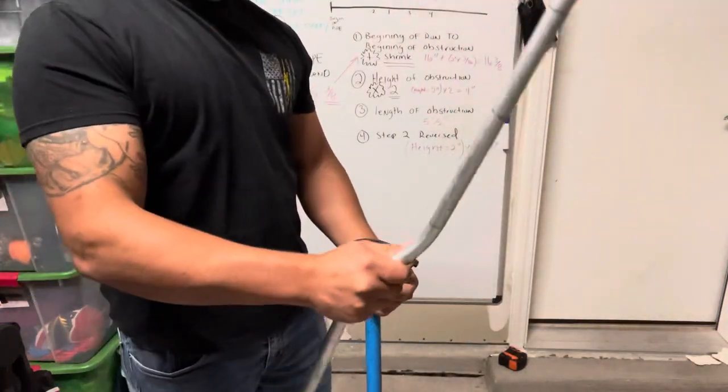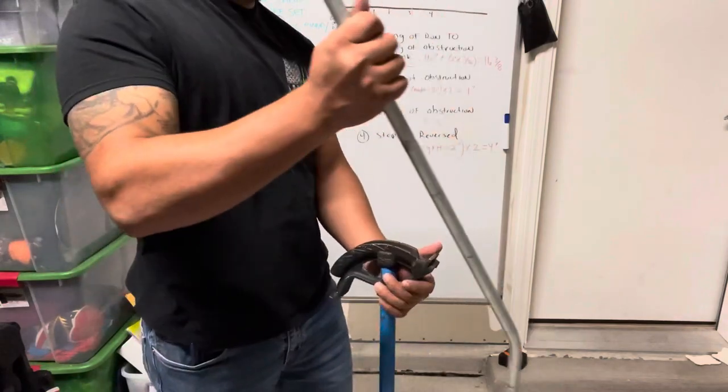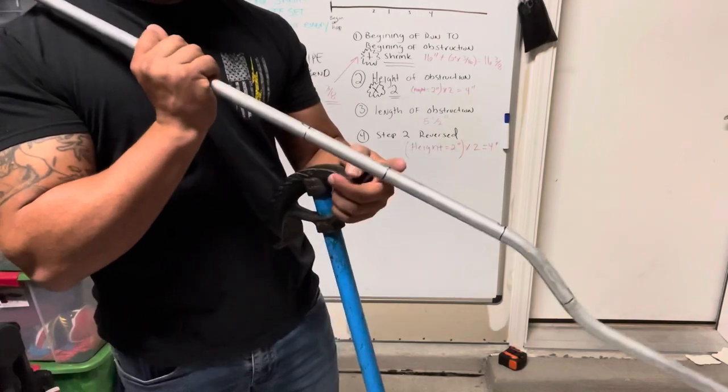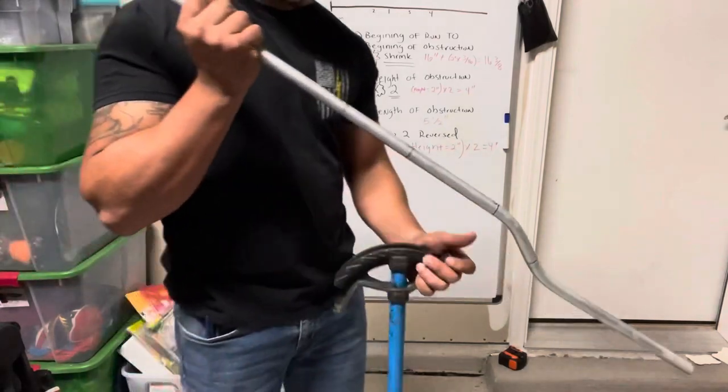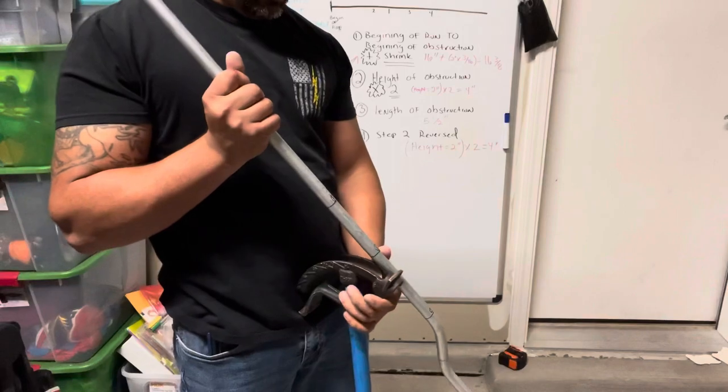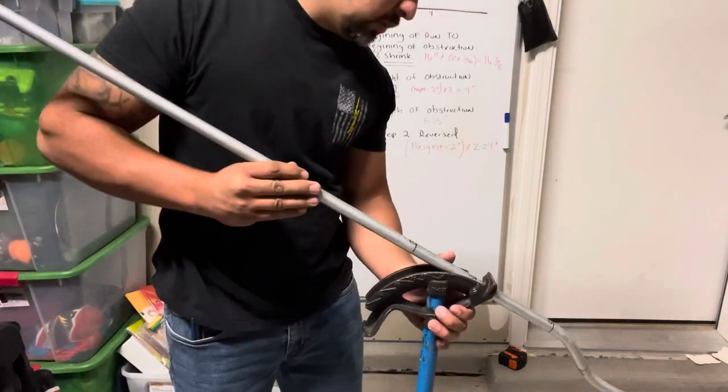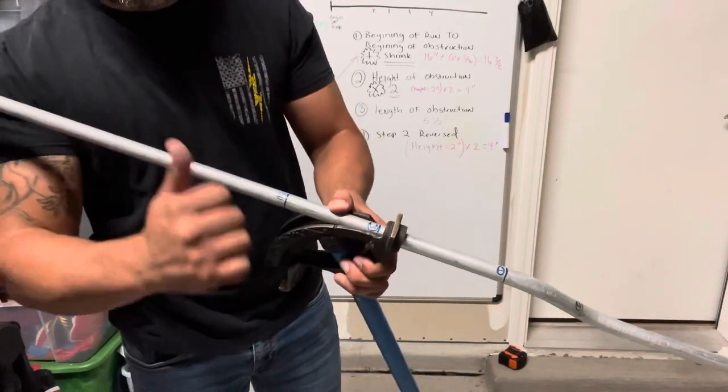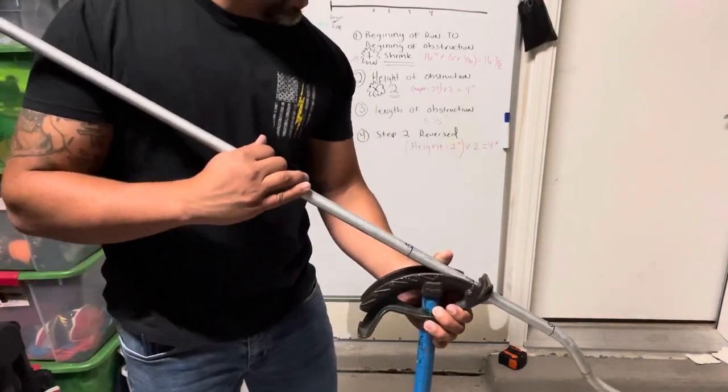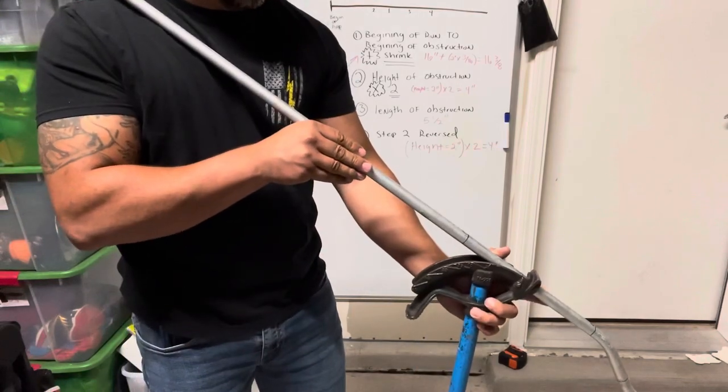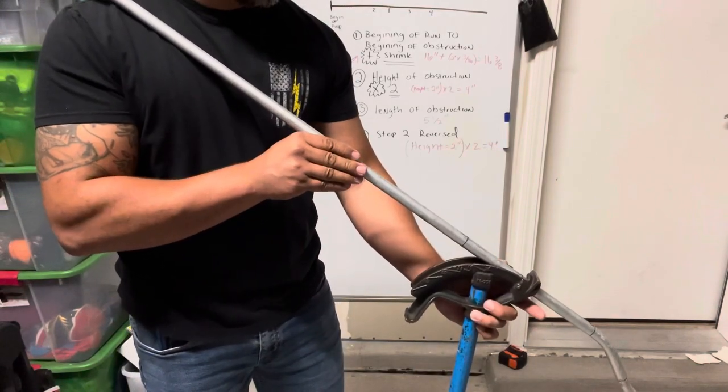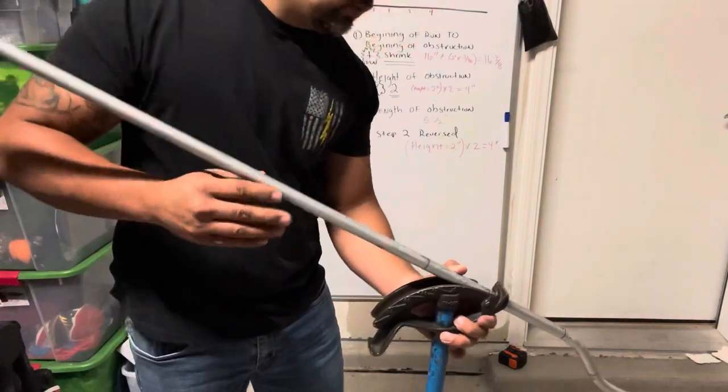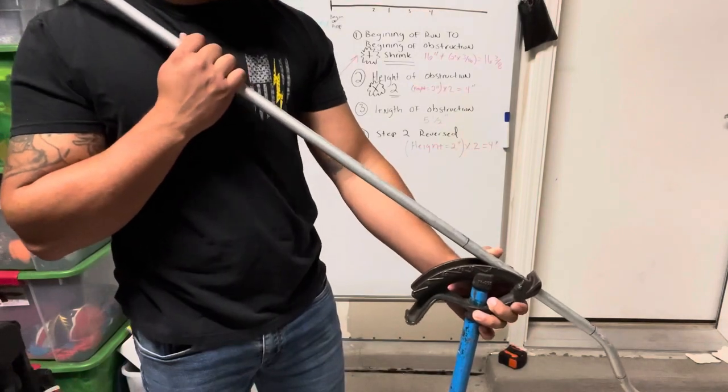Okay. Same process, just reverse. You're gonna now put the four at your back now. So you do the third one first, and number four is going to be closest to your body. So you have to literally flip it all the way around.